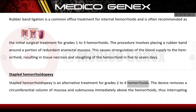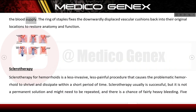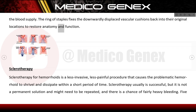Stapled haemorrhoidopexy is an alternative treatment for grades 2 to 4 haemorrhoids. The device removes a circumferential column of mucosa and submucosa immediately above the haemorrhoids, thus interrupting the blood supply. The ring of staples fixes the downwardly displaced vascular cushions back into their original locations to restore anatomy and function.